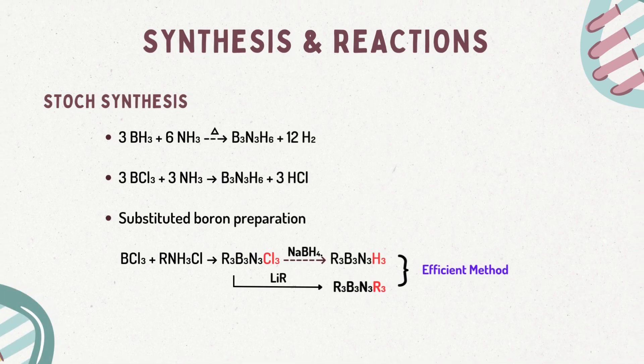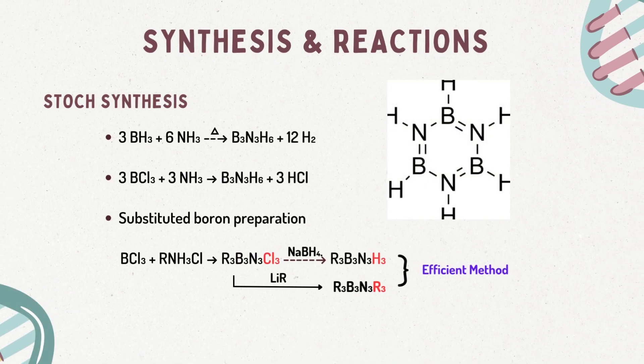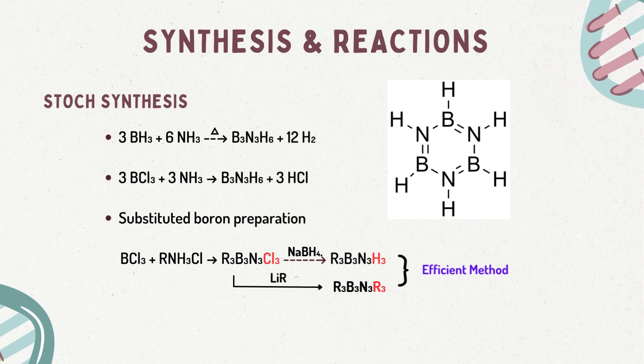Now let's dive into the synthesis and reactions of borazine. The synthesis of borazine is called Stock synthesis. Here, 3 moles of borane react with 6 moles of ammonia in the presence of heat to give borazine and 12 moles of hydrogen. Also, 3 moles of boron trichloride reacts with 3 moles of ammonia to give borazine and 3 moles of HCl. Another efficient method for synthesizing borazine is substituted boron preparation, where boron trichloride reacts with substituted ammonium chloride to give R3B3N3Cl3, which further reacts with sodium borohydride or alkyl-lithium to form substituted borazine.